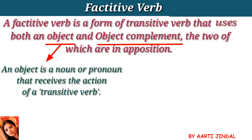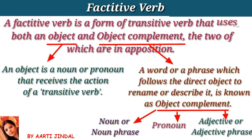Object ko hum verb ke baad use karte hain. A word or a phrase which follows the direct object to rename or describe it is known as objective complement. Woh word ya phrase jo direct object ko describe karta hai, relate karta hai, rename karta hai — means objective ke baare mein kuch information deta hai — us word ya phrase ko hum objective complement kehte hain. As an objective complement we use noun or noun phrase, pronoun, adjective or adjective phrase.